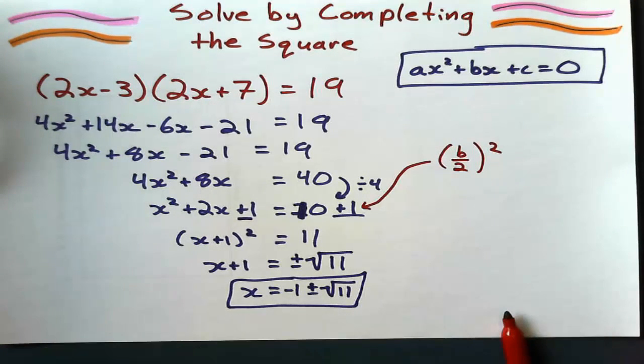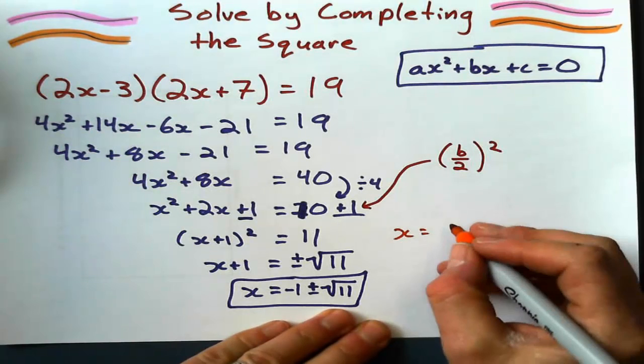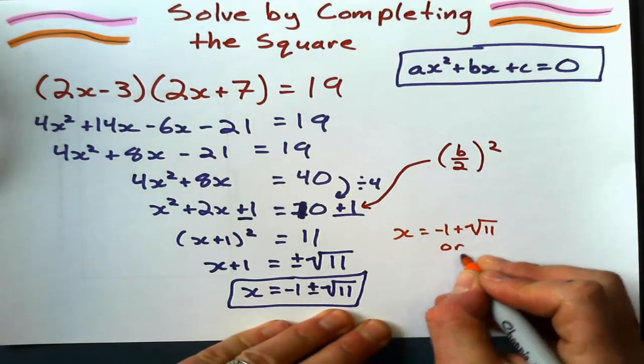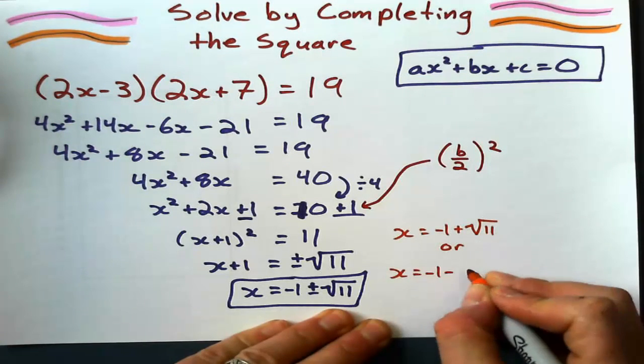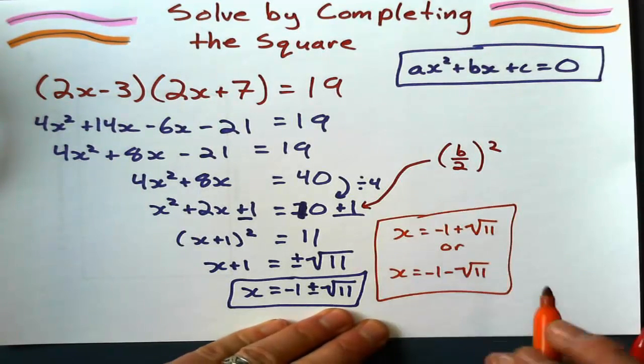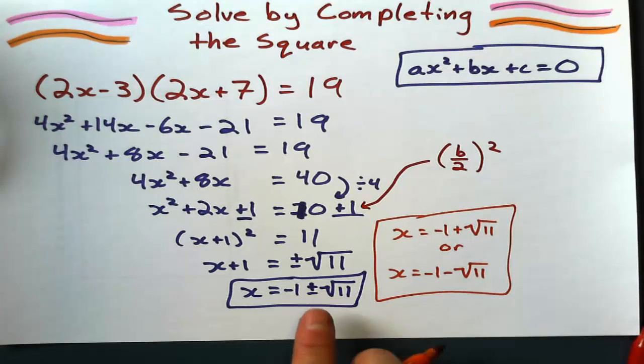Now here, we could leave it at this answer if we want to, or we can get decimal equivalents and say that x equals negative 1 plus the square root of 11, or x equals negative 1 minus the square root of 11. Figure out what those decimal equivalents are. Or we could just leave it as this expression right here, saying that these are two different answers.